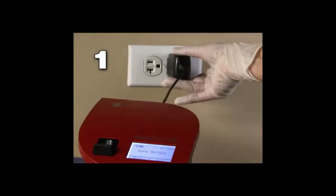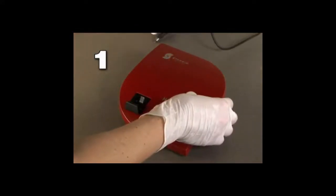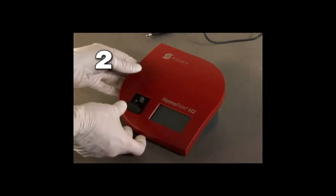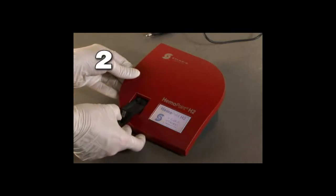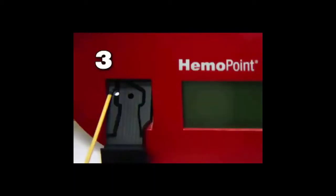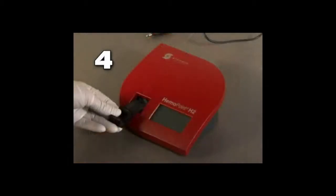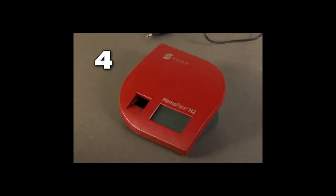To safely clean the Hemopoint H2 photometer cuvette holder, disconnect the power adapter from the electrical connection before proceeding. With the Hemopoint H2 in the ready mode, open the cuvette holder until you feel a resistance and the holder will not extend further. Locate the silver pin on the left-hand side of the cuvette holder. While depressing the silver pin with a pointed object, slide the cuvette holder towards you and away from the Hemopoint H2.